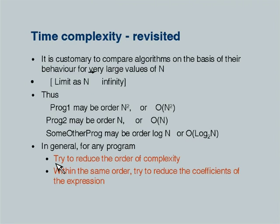Within two algorithms having the same order of complexity, try to reduce the coefficients of the expression. Why I emphasize this — generally when you write large programs, you tend to forget about the efficiency of your program till the entire system is developed, and when you try to run your programs later you find that they are not executing fast enough to meet real life demands. In general it is a good idea to keep the efficiency of the program in mind while designing the program itself, not subsequently. It is extremely difficult to tinker with a program and algorithm which you have already written, especially if the program is large or complex.